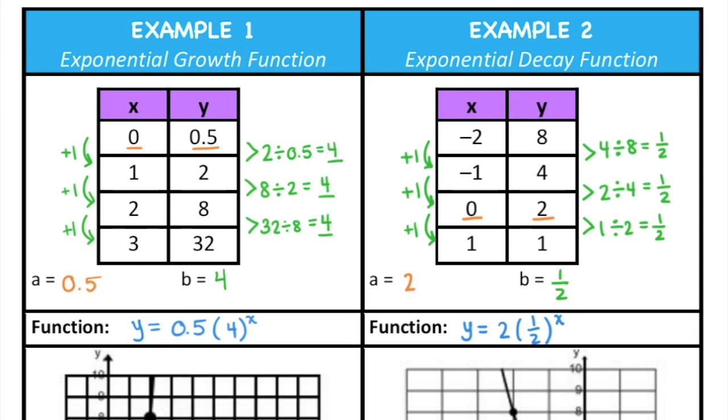So it's really important to be able to tell the difference between an exponential growth function and an exponential decay function. When we write them, they're both written in almost exactly the same way. They have an initial value which is a, they have a common ratio which is b, and then the exponent on the common ratio is our variable x. Now the difference between an exponential growth function and an exponential decay function is that when the x values are increasing, the y values are increasing for exponential growth. But if the x values are increasing and the y values are decreasing, it's exponential decay.